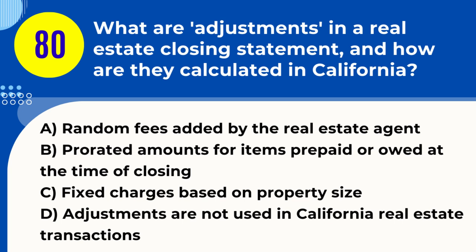Question 80. What are adjustments in a real estate closing statement and how are they calculated in California? A. Random fees added by the real estate agent. B. Prorated amounts for items prepaid or owed at the time of closing. C. Fixed charges based on property size. D. Adjustments are not used in California real estate transactions. Answer: B. Explanation. Adjustments on a real estate closing statement in California refer to prorated amounts for items that have been prepaid or are still owed at the time of closing. This can include prorated property taxes, homeowner association dues, utility bills, and interest. These adjustments ensure that the buyer and seller only pay their respective shares of these costs up to and from the closing date.